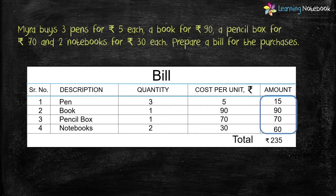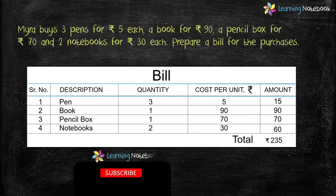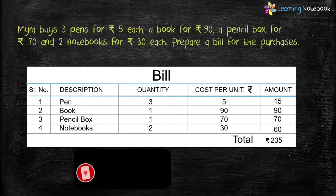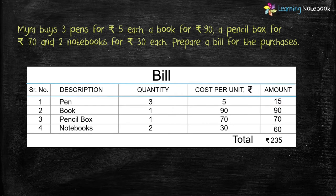We get the total amount as rupees 235. So in this way we can make a bill from the given information.